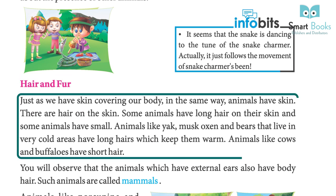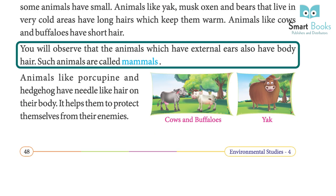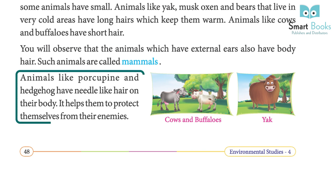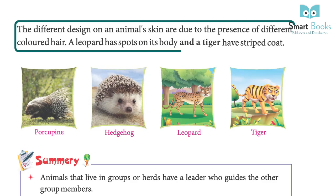Hair and fur: just as we have skin covering our body, animals also have skin with hair on it. Some animals have long hair and some have short hair. Animals like yak, musk oxen, and bears that live in very cold areas have long hair which keeps them warm. Animals like cows and buffaloes have short hair. Animals with external ears also have body hair — such animals are called mammals. Porcupines and hedgehogs have needle-like hair that helps them protect themselves from enemies.